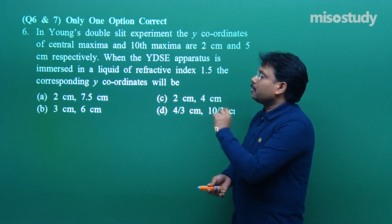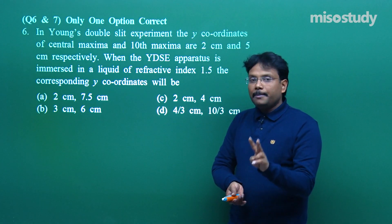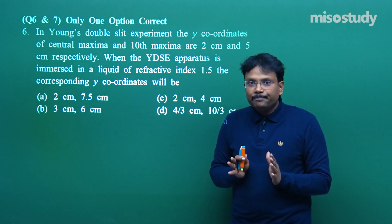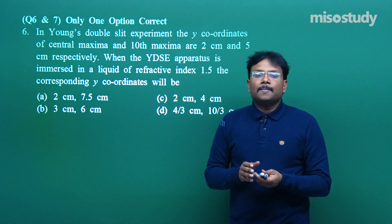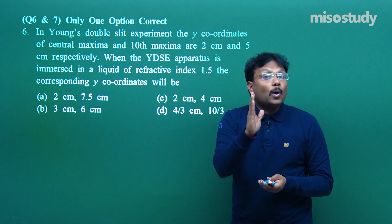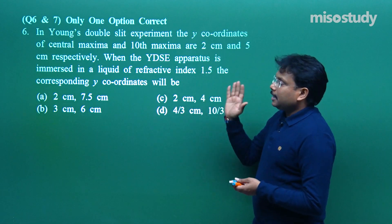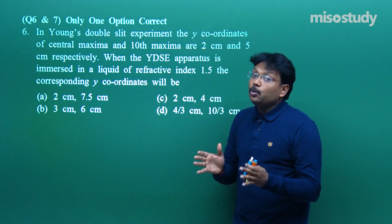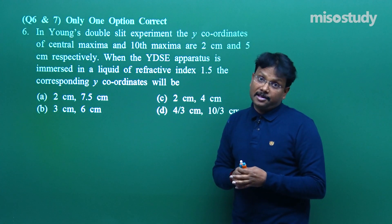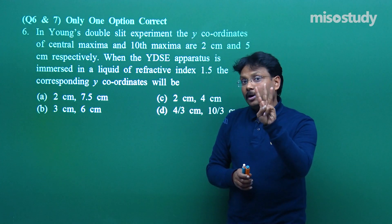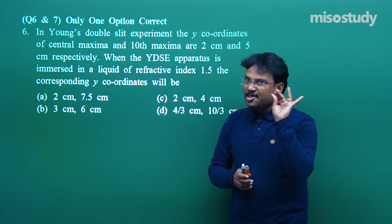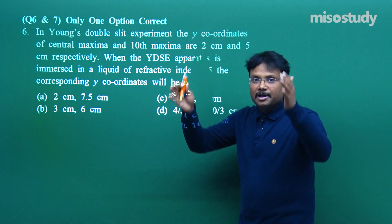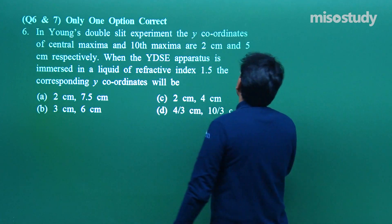If you look at the sequence of questions 1 to 5, I used two concepts very clearly. Number 1: normal YDSE. Number 2: I introduced a transparent glass sheet in one of the rays. And here the second aspect is: the entire setup is placed in a liquid. So how things are going to change, we will analyze that. There are three important aspects: plain YDSE, transparent glass sheet in the path, and the setup inside a liquid.